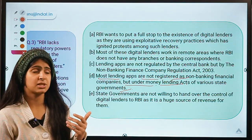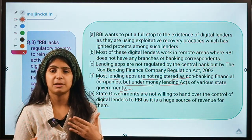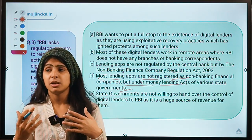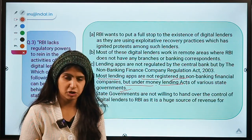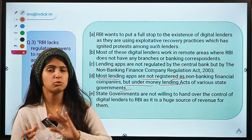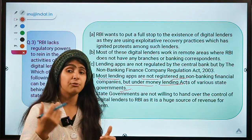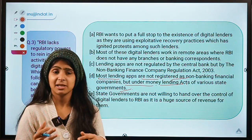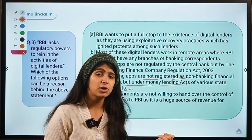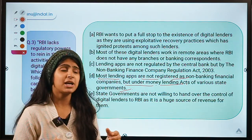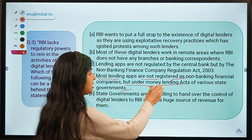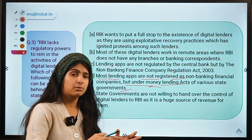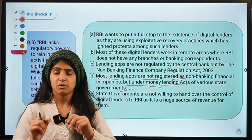In our digital lending session we discussed why digital lenders are important — they provide loans to that section of society not catered by traditional banks. But when they come to loan recovery, they use exploitative practices and harass their borrowers. That is why RBI is getting stricter. However, it is difficult for RBI to control these lenders because they are not registered as NBFCs but under different state acts, making the controlling process really complicated.